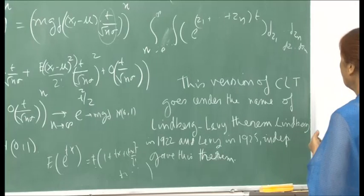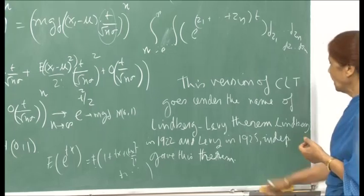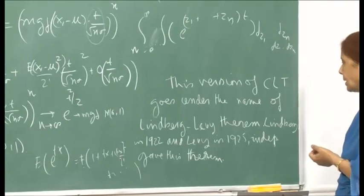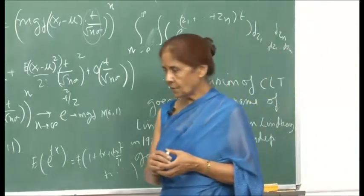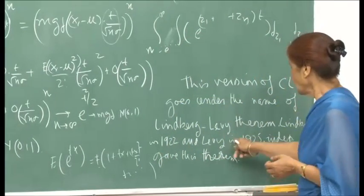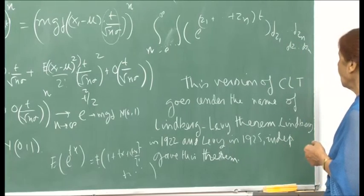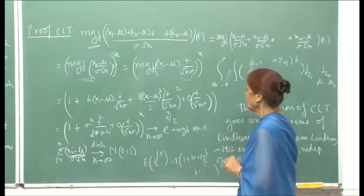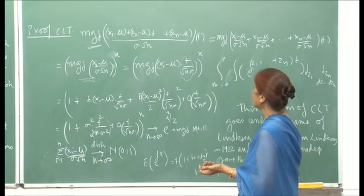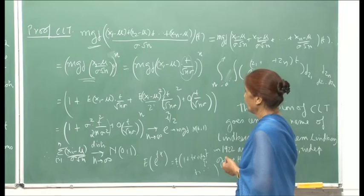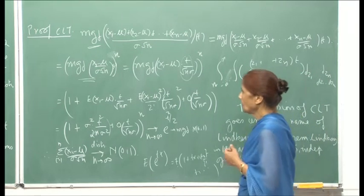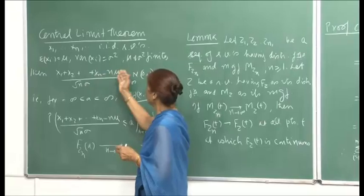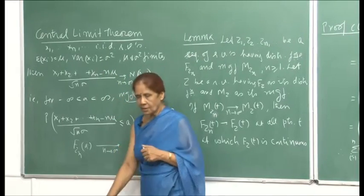This version of the CLT goes under the name of the Lindbergh-Levy theorem. Lindbergh in 1922 and Levy in 1925 independently proved this result — independent of each other, three years apart. Therefore, it is also sometimes known as the Lindbergh-Levy theorem, though most commonly it is referred to as the central limit theorem. The proof is simple, using only independence, identical distribution, and the properties of the MGF.